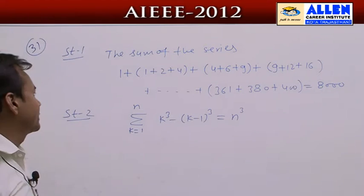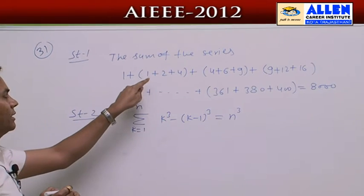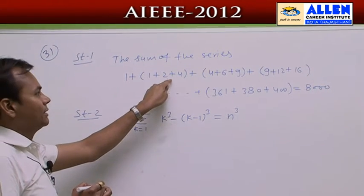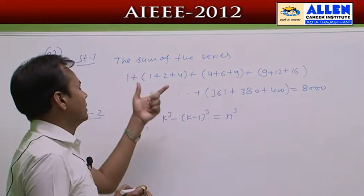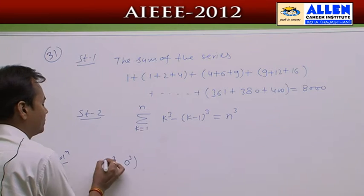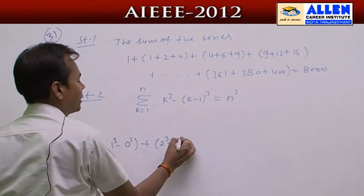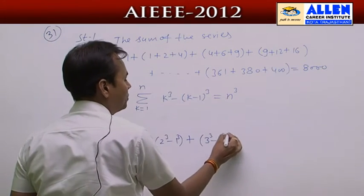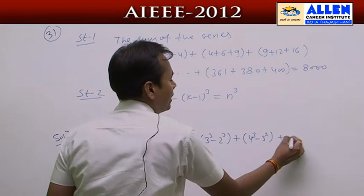First we take Statement 1. The first term is 1, the second term is 1 + 2 + 4 = 7, and the third term is 4 + 6 + 9 = 19. The given series can be rewritten as: (1³ − 0³) + (2³ − 1³) + (3³ − 2³) + (4³ − 3³) and so on.